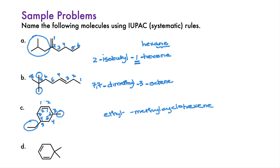The schemes are 3-5 going right versus 4-6 going left. 3 beats 4 at the first number, so the first scheme wins. Methyl gets position 3 and ethyl gets position 5.